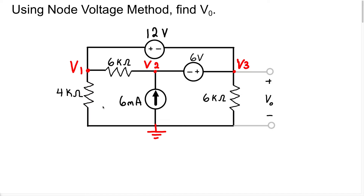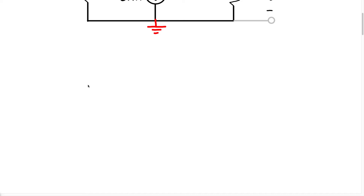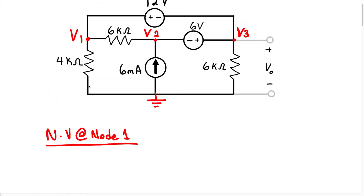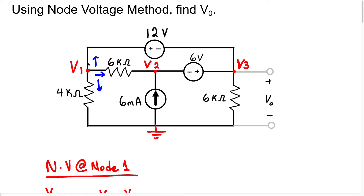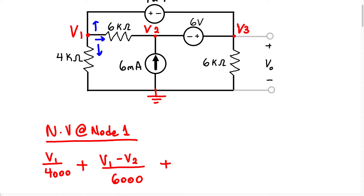Now let's start to write our node voltage equations. We're going to start at node 1. We assume the current is leaving the node in each direction. So we're going to have V1 over 4,000 for the current flowing in that branch, plus the difference in voltage between V1 and V2 divided by 6,000, plus the current flowing in this branch here.